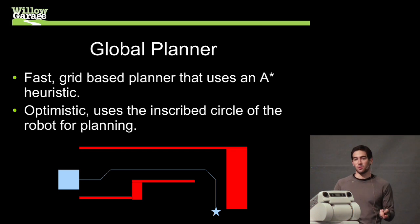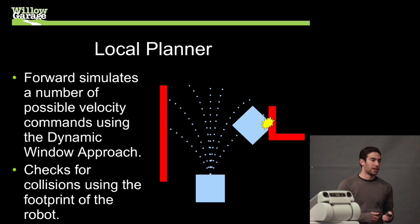So we also have this local planner that takes the global plan and tries to follow it, taking into account the dynamics of the robot. So it just uses the dynamic window approach, which I'm sure a lot of you are familiar with. And it checks collisions using the full footprint of the robot. So the gist of it is it rolls out a number of possible trajectories and just picks the one that scores the best based on some cost function and also a collision-free path.